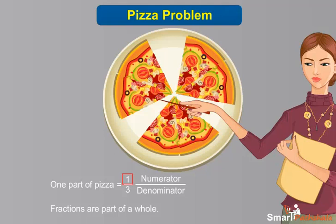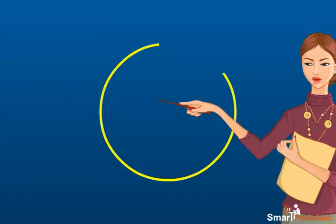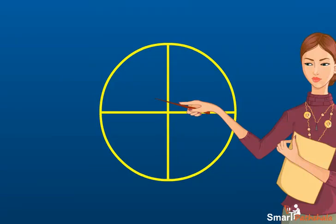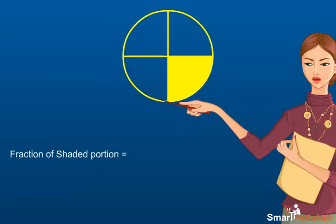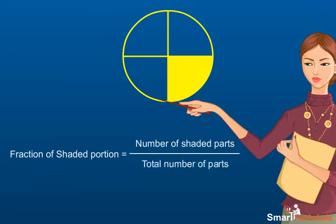The denominator states how many total parts the whole has been divided into. The numerator states how many of those parts are being represented by the fraction. If a figure is divided into equal parts, then the fraction for the shaded portion is number of the shaded parts upon the total number of parts.